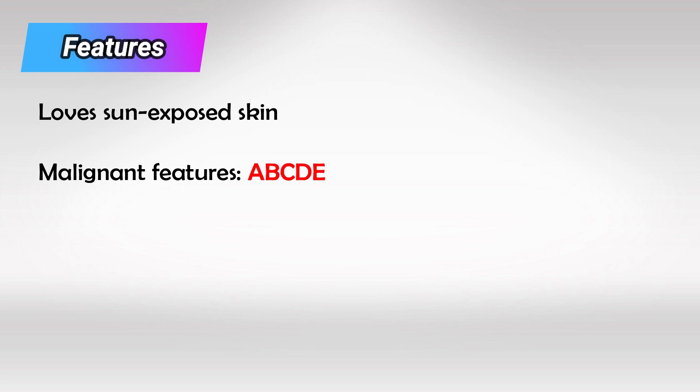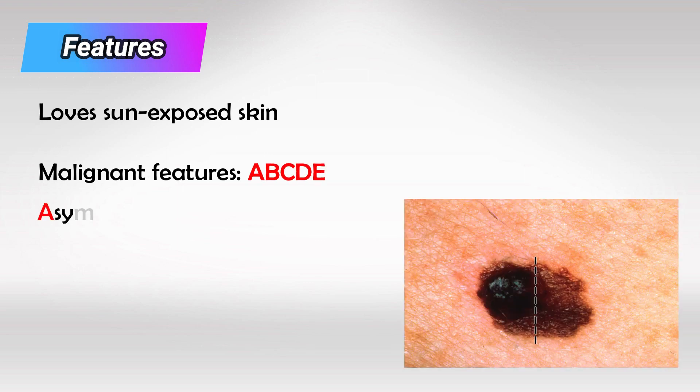We can clinically differentiate between benign and malignant melanoma using the mnemonic ABCDE. A for asymmetry — an asymmetrical melanoma is malignant, because a lot of melanocyte cells are dividing in all directions. On the other hand, a round melanoma is benign.